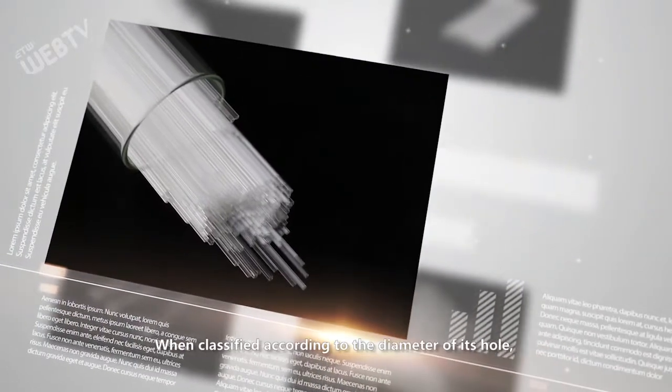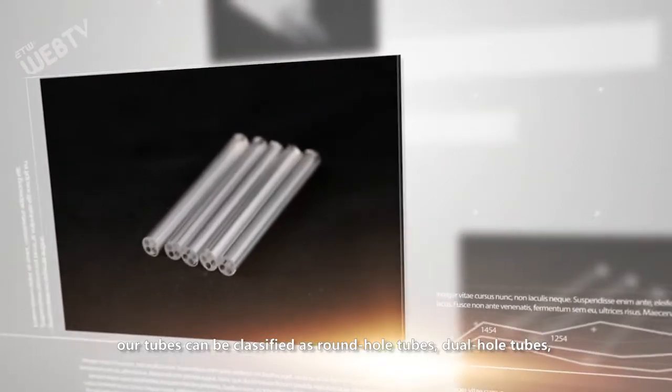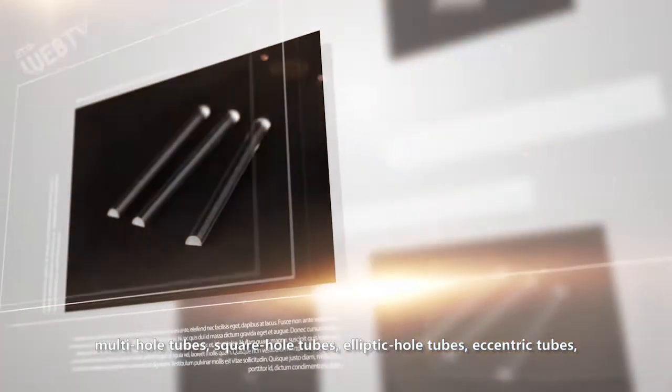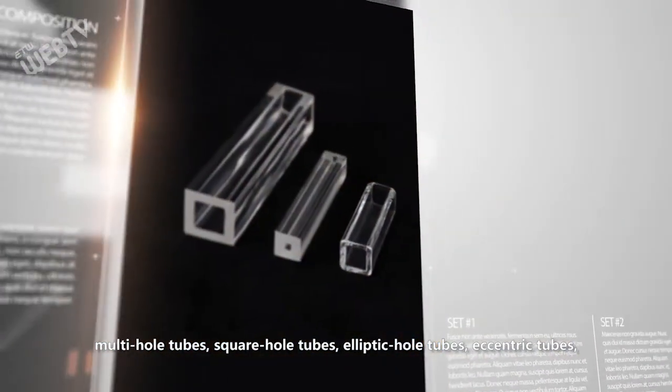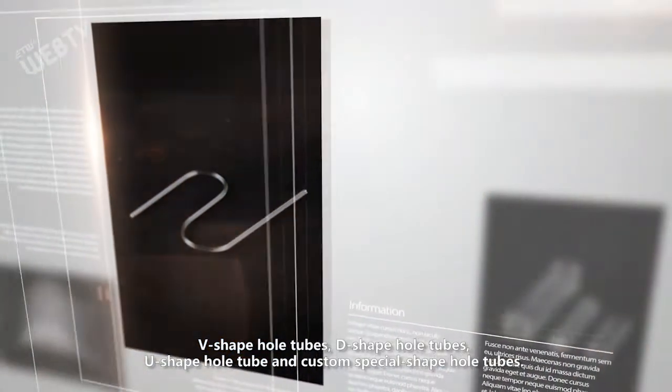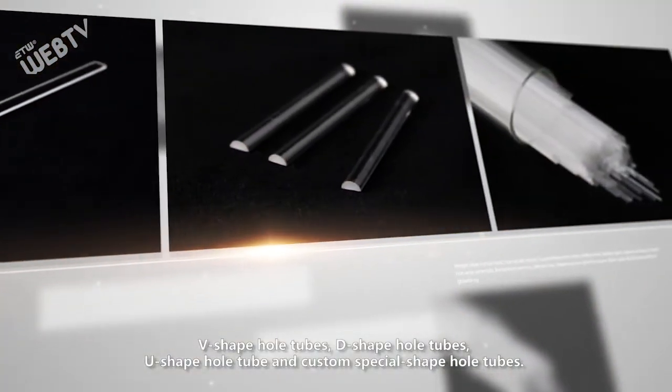When classified according to the diameter of its hole tubes, our tubes can be classified as round hole tubes, dual hole tubes, multi-hole tubes, square hole tubes, elliptical tubes, eccentric tubes, V-shaped hole tubes, D-shaped hole tubes, U-shaped hole tubes, and custom special-shaped hole tubes.